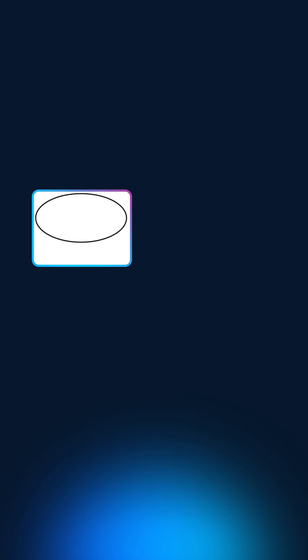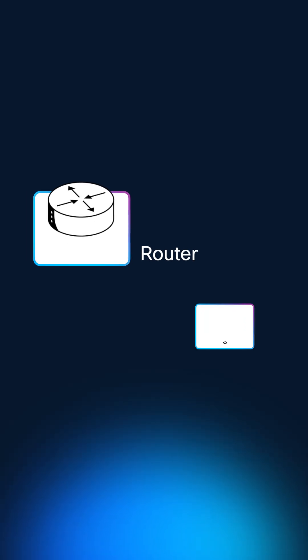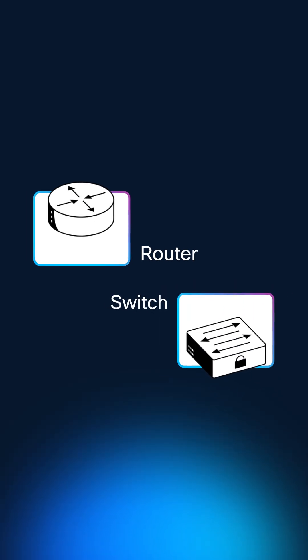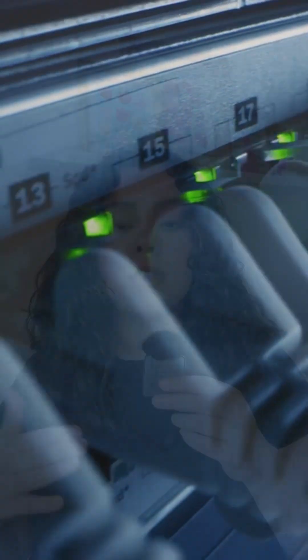Throughout your entire networking journey, you are going to be referencing different types of network devices and cables. This exam covers hardware devices like routers that connect your network to the internet, switches that help devices inside a network talk to each other, and access points that give you access to Wi-Fi, especially in your home network. There are also cables: the standard fast and reliable ethernet cable, and fiber optic cables used for bigger setups, as they use actual light instead of electricity to move data.